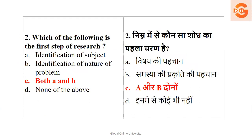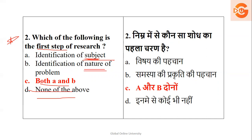Next: which of the following is the first step of research? The first step is identification of a problem. But here the options are: identification of the subject, identification of the nature of the problem. The subject is nothing but a problem, and identifying the nature of that problem is identification of the nature of the problem. So the right answer is option C — both A and B.